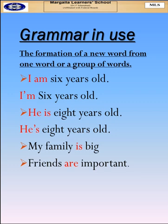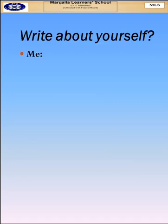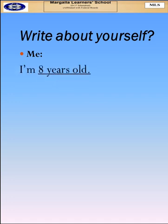When we talk about more than one thing, like friends, we use 'are' — for example, 'Friends are important.' We use 'are' with more than one thing. Now, let's write about yourself: 'I am 8 years old. My family is big.'